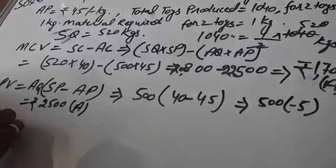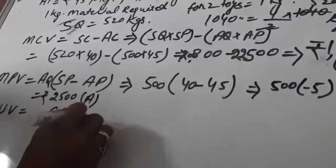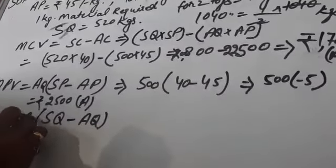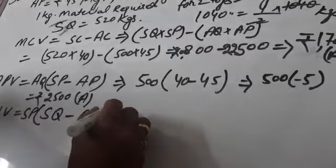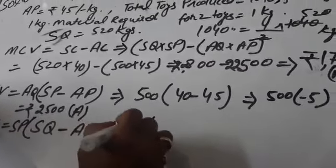MUV, Material Usage Variance: standard quantity minus actual quantity multiply standard price. We will put the values. Standard price 40, standard quantity 520 as we calculated earlier.